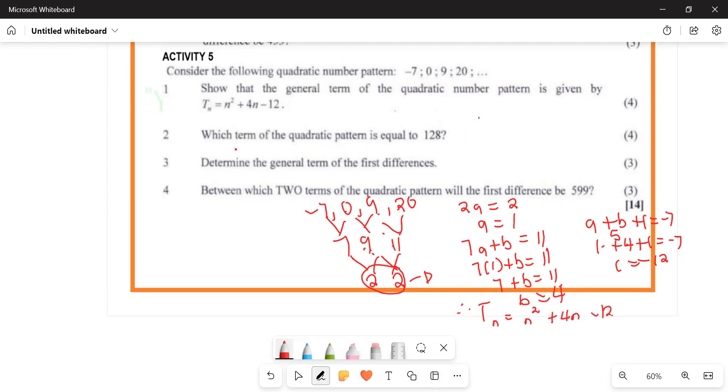Question two asks: which term of the quadratic pattern equals 128? We use the formula Tn = 2n² + 4n - 12. Setting Tn = 128, we get 2n² + 4n - 12 = 128. Simplifying: 2n² + 4n - 12 - 128 equals zero.